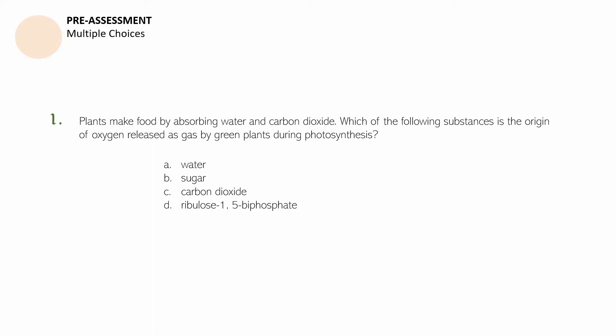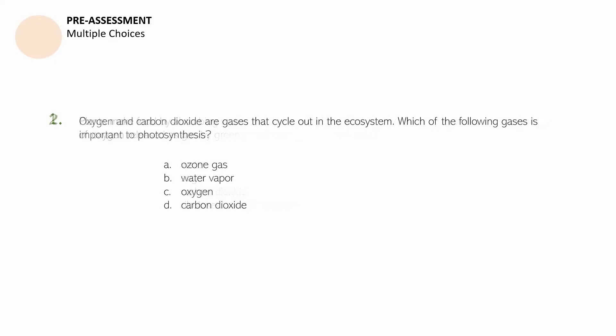You may pause this video if you need more time. Question number two: Oxygen and carbon dioxide are gases that cycle out in the ecosystem. Which of the following gases is important to photosynthesis? A. Ozone gas. B. Water vapor. C. Oxygen. D. Carbon dioxide. You may pause this video to get more time.